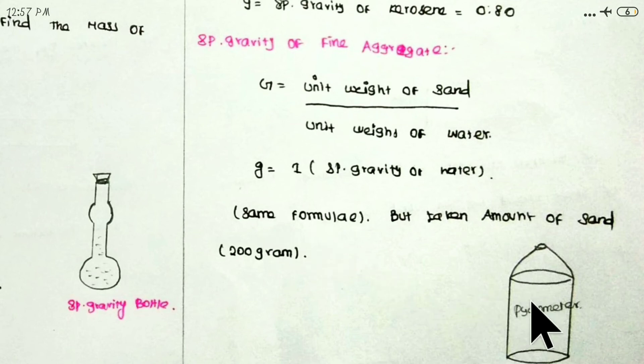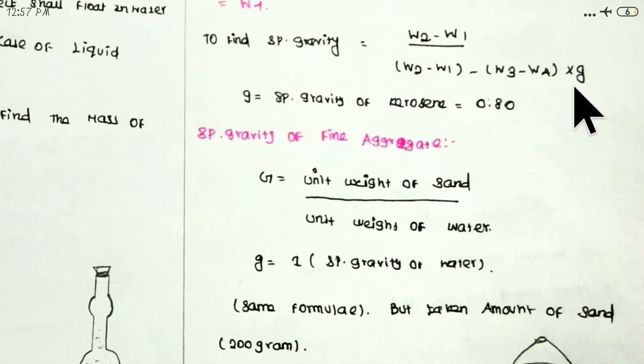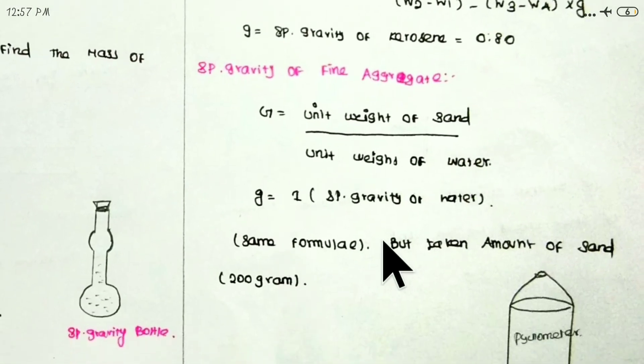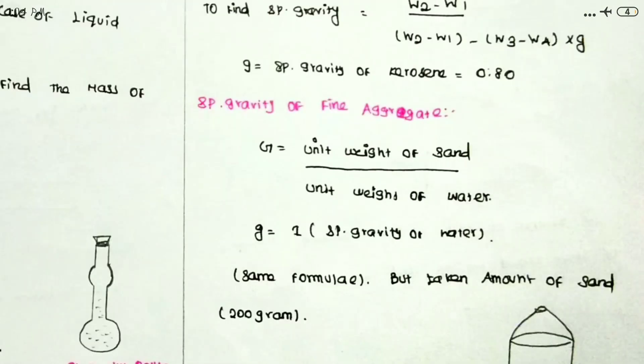We take W2 as 100 grams of sand, then W3 with sand and water, then W4 with just water. Using G as the specific gravity of water, we calculate. The specific gravity of sand is 2.6.